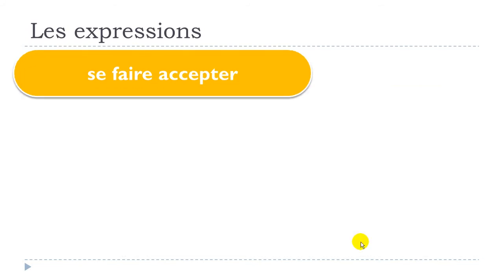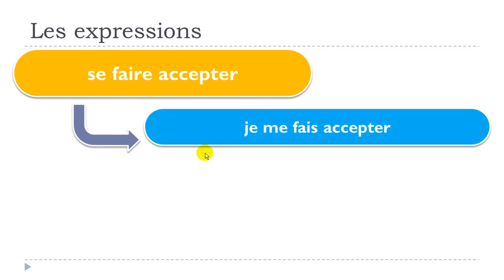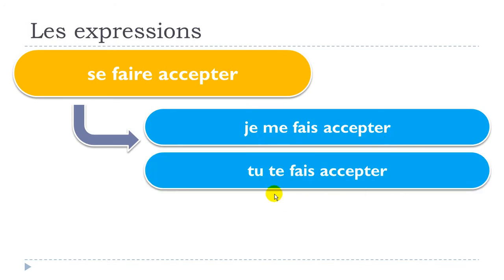Let's see now how you can conjugate that at the present form. As you can see, we get this 'se faire accepter' form, so you will have to modify the 'se' when you conjugate it. At the first person, when you get 'je', you put 'me': 'je me fais accepter'.